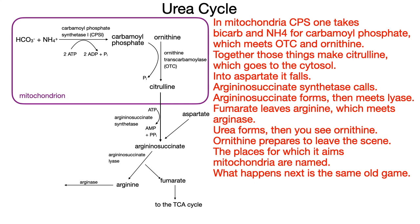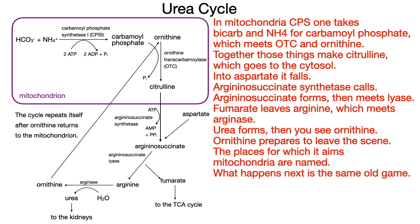Which means arginase. Urea forms, then you see ornithine. Ornithine prepares to leave the scene. The places for which it aims — mitochondria are named. What happens next is the same old game.